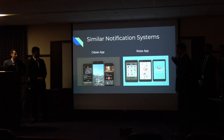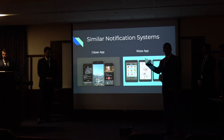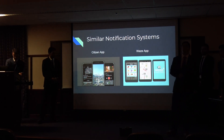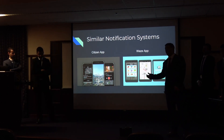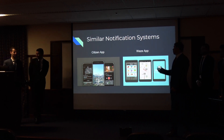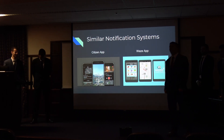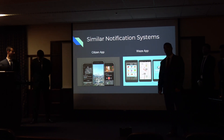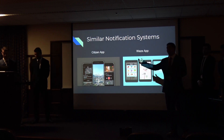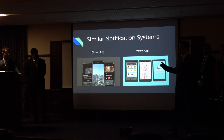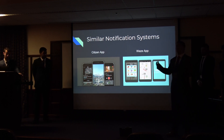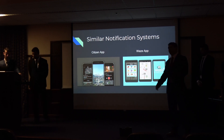For our notification system, we're modeling it after the Citizen app and Waze. Citizen notifies you of crimes in your area, while Waze is a GPS app where users can add inputs such as a pothole or a cop a mile up. The biggest difference our system has over these is that our information will be automatic when received.